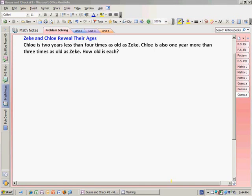Oh my gosh, this just seems so difficult. So let's reread it and make sure that we have the key pieces of information that we need. Chloe is two years less than four times as old as Zeke. Well, I know that's important. We also know that Chloe is one year more than three times as old as Zeke. So I'm going to highlight that as well.